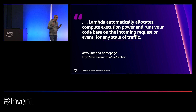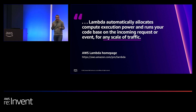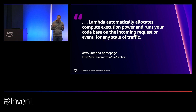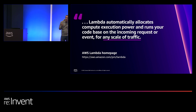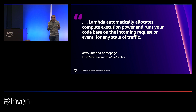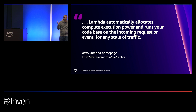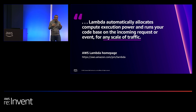Lambda is designed for any scale of traffic. If you don't have any traffic, the Lambda function will be in a sleeping mode, and the first request that comes will basically wake up the function — this is what we call a cold start. You'll also experience cold starts when you have a sudden spike of traffic. Let's say you have 100 transactions per second and suddenly a huge spike occurs — new Lambda instances will be spawned and you'll experience cold starts.